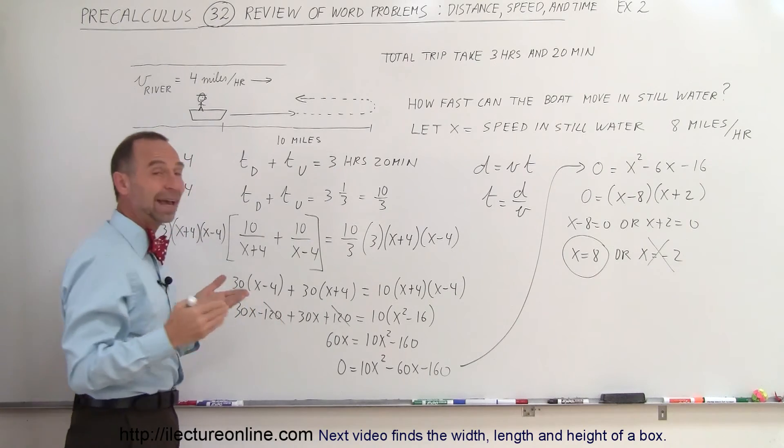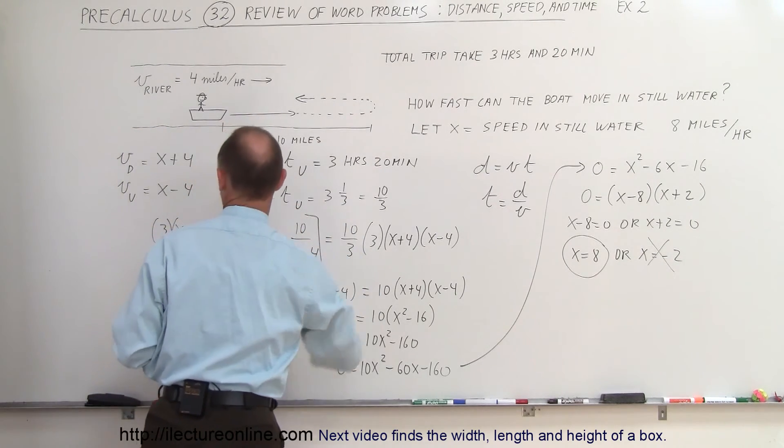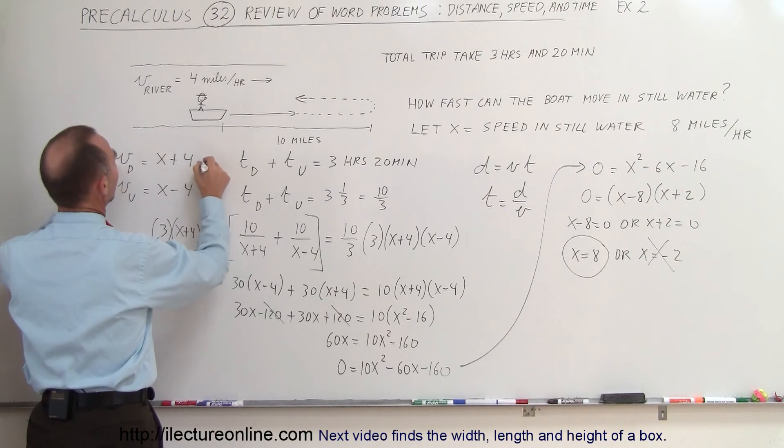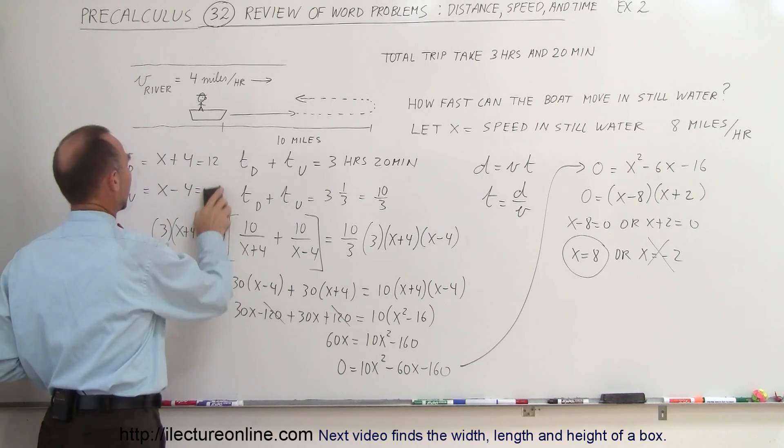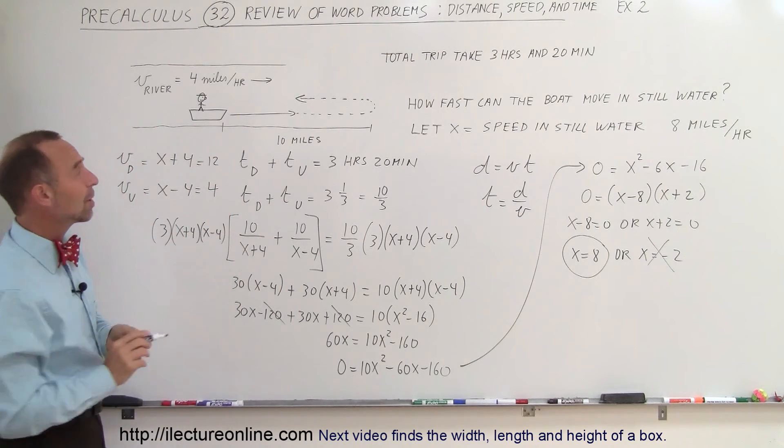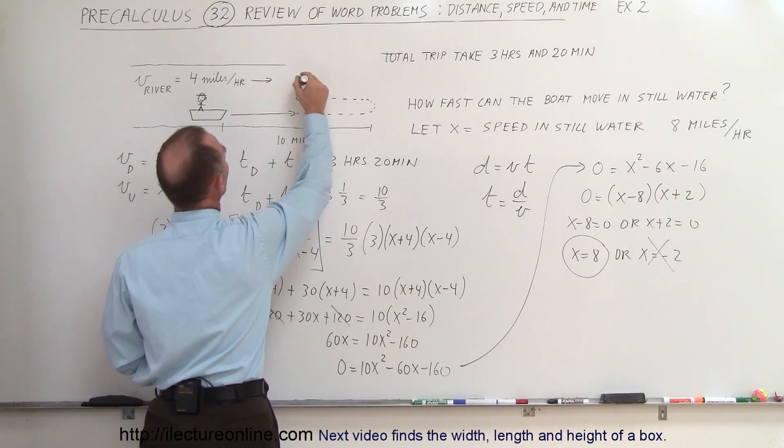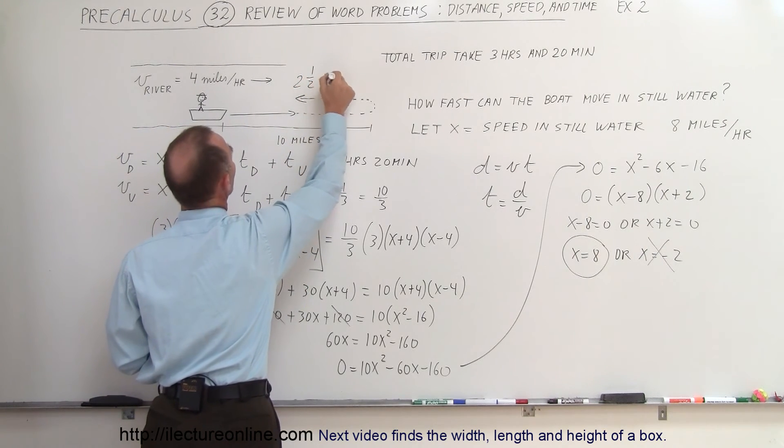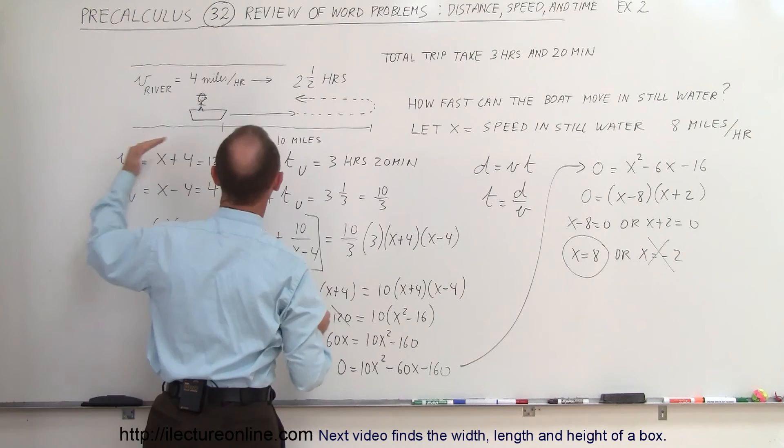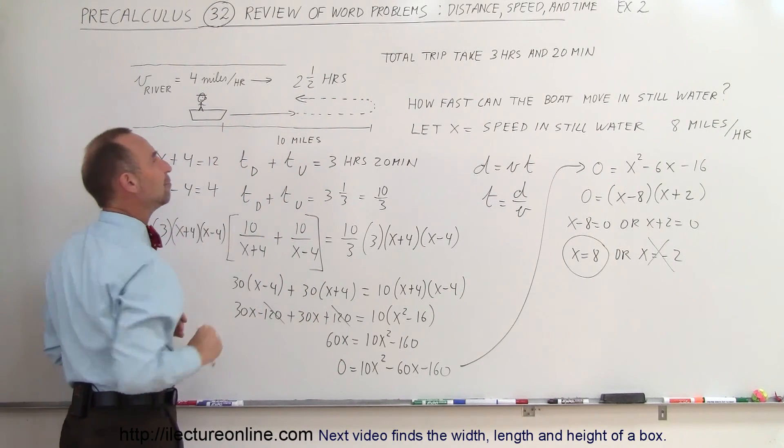So, on the trip up, let's see if we have the right answer to work this out. Velocity down is equal to 12, velocity up is equal to 4. If he's traveling upstream, traveling 10 miles at 4 miles per hour, that means it takes 2 and a half hours to come upstream, and to travel downstream, he's traveling 10 miles at 12 miles per hour.